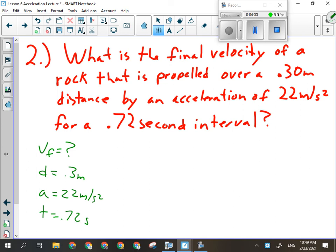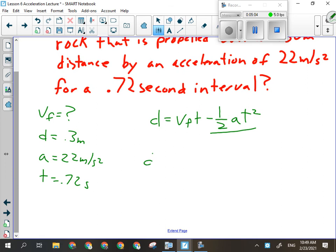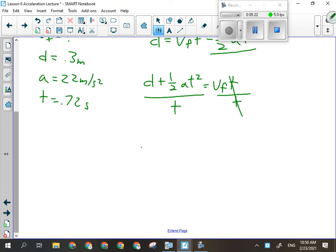Let's have a look at our givens. First off, they want us to find VF. So that's my question mark. Of a rock that's propelled over a .30 meter distance. So distance is .3 meters by an acceleration of 22 meters per second squared for a time of .72 seconds. So I've got D, I've got A, and T. The only formula I've got that's got all of those things in it is this one: D equals VF times T minus 1 half AT squared. But I need to solve for VF. So to manipulate this, I need to add this term over to the other side. That's going to be D plus 1 half AT squared equals VF times T. And I'm going to divide both sides by T.